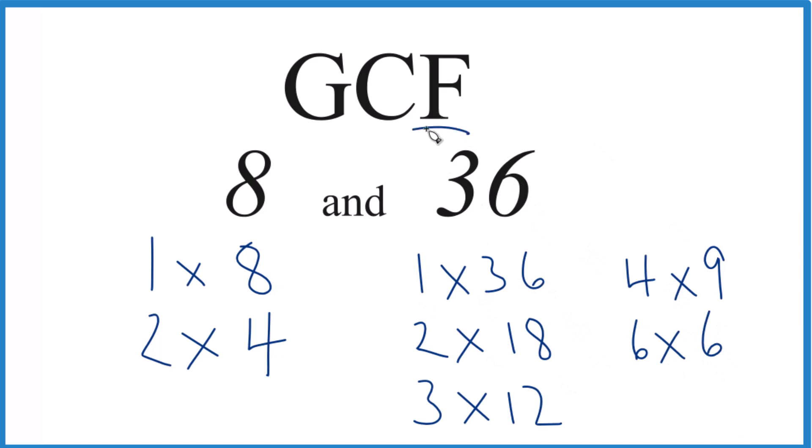So we have our factors. Let's look at the ones in common here. Looks like 1 goes into 8 and 36, so that's common. 2, that's common. And 4. It looks like 4 is the greatest common factor. This is the greatest number for both 8 and 36 which goes into them evenly.